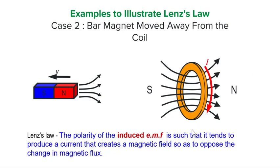Note that the current direction is actually opposite to what we obtained before. Again in this case, we see that the induced magnetic field by the induced current is now in the same direction as the external field by the bar magnet, as the coil is experiencing a decreasing flux linkage. Hence, the net effect of the two fields is to reduce the effect of this decreasing flux linkage.